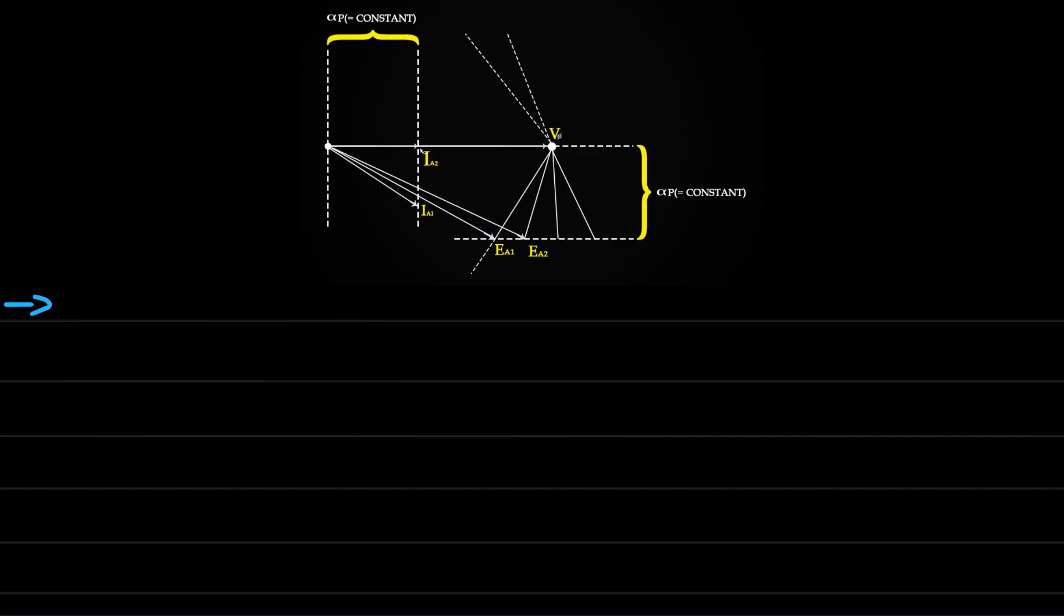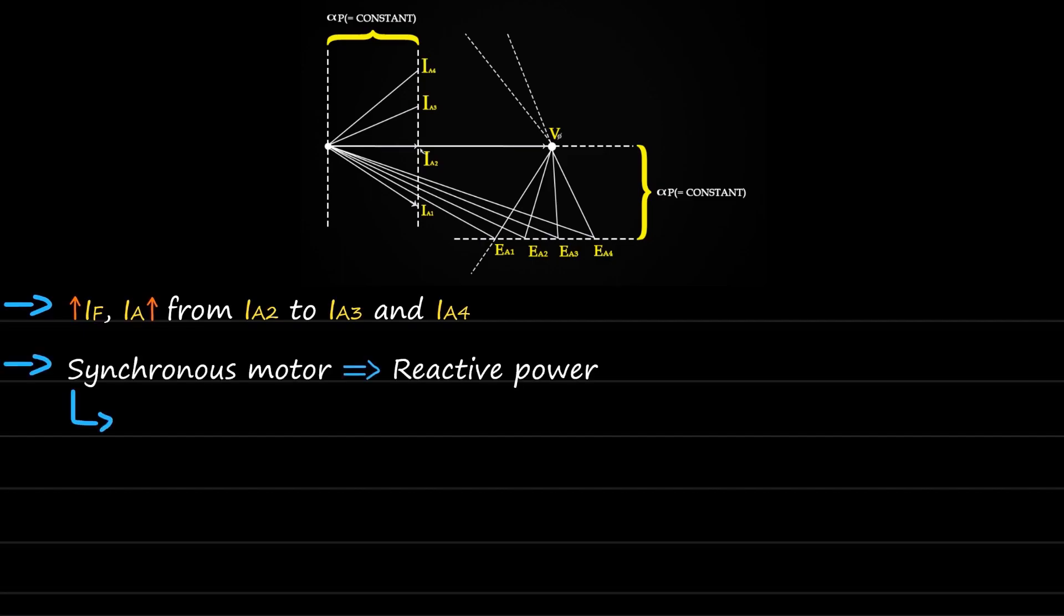Now, what will happen if we keep increasing IF? Value of Ia increases from Ia2 to Ia3 and Ia4, which means that the synchronous motor will now be providing reactive power - that is, the leading operation condition has been achieved.